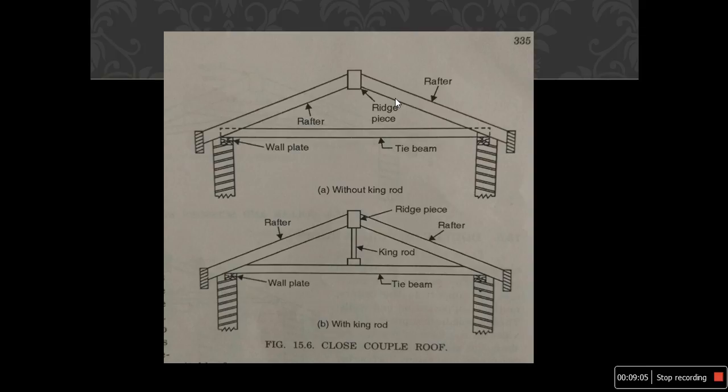In a close-coupled roof, the rafter is connected by means of a ridge piece and a tie beam. The tie beam along with the rafter is supported on the wall and countered by means of a wall plate. Two variations are shown: one without a king rod and one with a king rod.